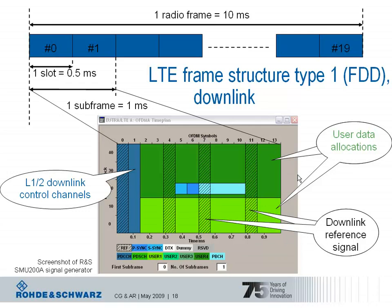A question about the hashed area shown over the entire bandwidth in the signal generator: the downlink reference signals indicated by the hashed areas are not actually transmitted over the whole 10 MHz bandwidth. It is just indicating the OFDM symbols which carry downlink reference signals at specific subcarrier locations inside those symbols — the hashed areas are used simply for visual simplification.